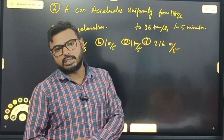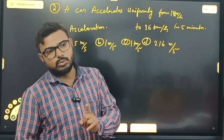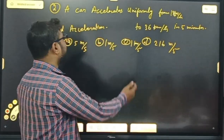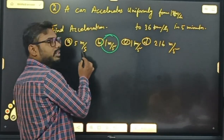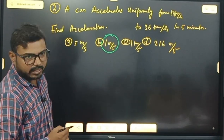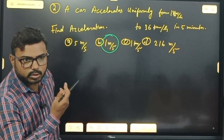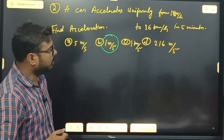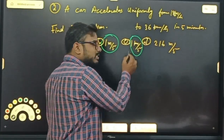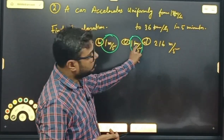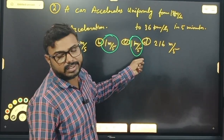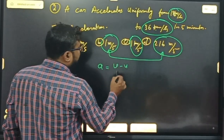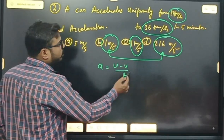If you look at this unit, then you can see the answer. Acceleration की unit meter per second square होती है। Meter per second square नहीं होता — velocity या displacement में meter per second होता है। Kilometer per second square कभी acceleration में नहीं होता — कोई combination नहीं होता। Formula होता है: change in velocity upon time taken। तो V और U —